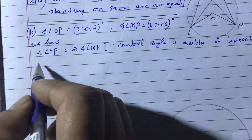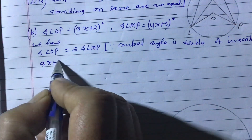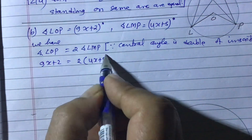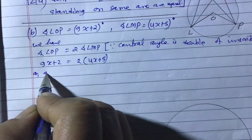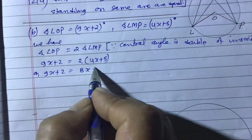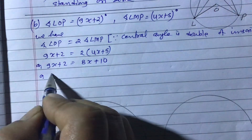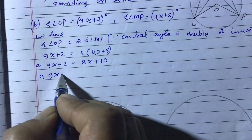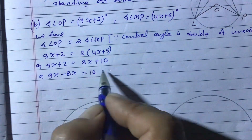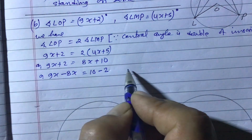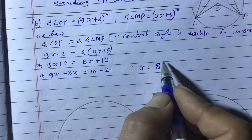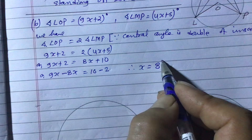Substituting: 9x plus 2 equals 2 times (4x plus 5), which gives 9x plus 2 equals 8x plus 10. Transferring terms: 9x minus 8x equals 10 minus 2, therefore x equals 8. So the value of x is 8.